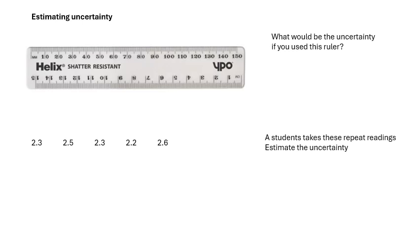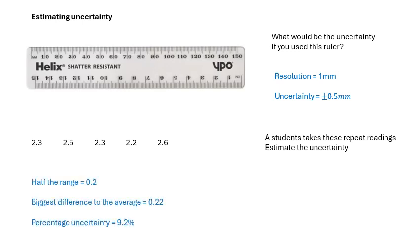Also from a set of results - a student takes these repeat readings, estimate the uncertainty. So what's the uncertainty? Now there's actually a couple of ways of doing it. One way of doing it is it's half of the range. So from 2.2 to 2.6, the difference is 0.4 divided by 2, and that's 0.2 - so half of the range. Another one is you work out the average, work out the mean, and then it's the biggest difference between the mean and either the highest or the lowest reading. And it should be about the same if it's a normal distribution. So the biggest difference to the average is about 0.22, and that gives a percentage uncertainty of 9.2 percent.